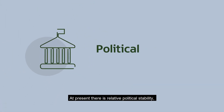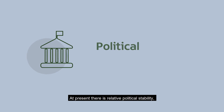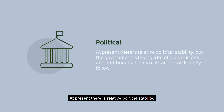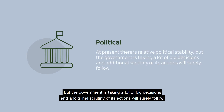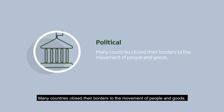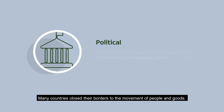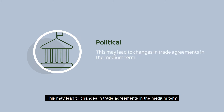Political. At present, there is relative political stability, but the government is taking a lot of big decisions and additional scrutiny of its actions will surely follow. Many countries have closed their borders to the movement of people and goods. This may lead to changes in trade agreements in the medium term.